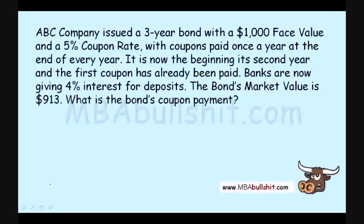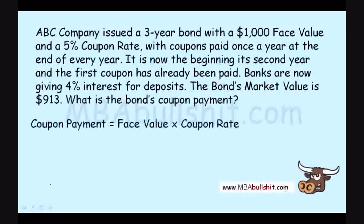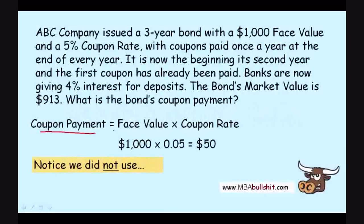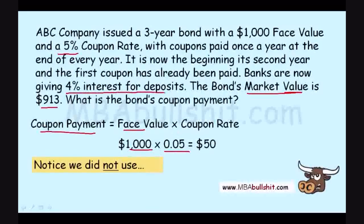What is the bond's coupon payment? It is very simple. The coupon payment is the face value, $1,000, times the coupon rate of 5%, and that equals $50. Notice that for the coupon payment, we used the face value — we did not use the market value of $913. We also used the coupon rate of 5%; we did not use the 4% discount rate or interest rate for deposits. Remember that when computing the coupon payment.